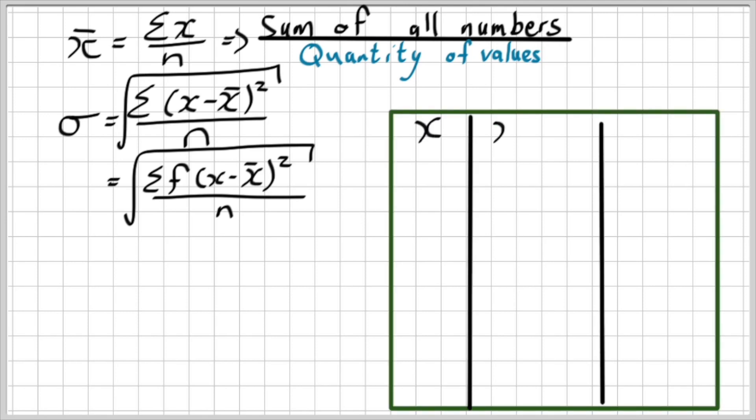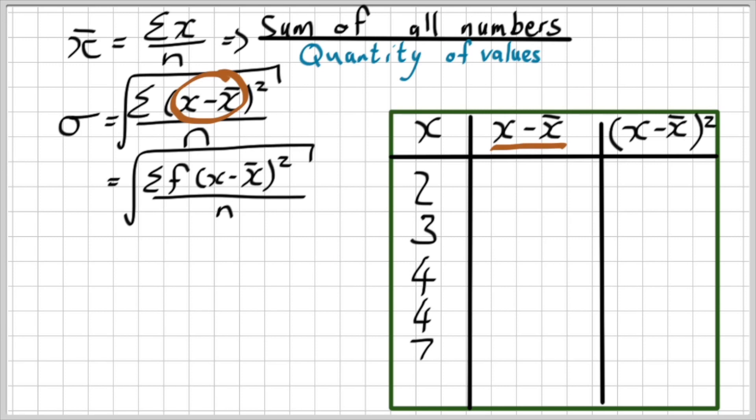So let's say I've got that table which I'm going to use with the numbers 2, 3, 4, 4, and 7. My end goal is trying to calculate the standard deviation. First of all, if you look at the top of the formula, I've got x minus the mean. That's what I've got there.